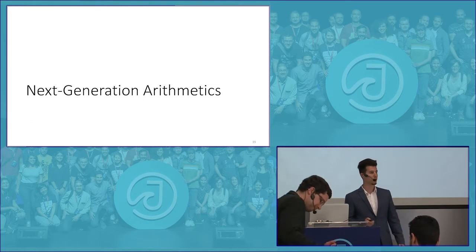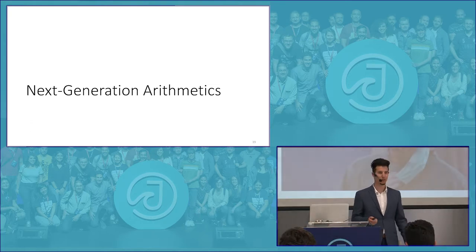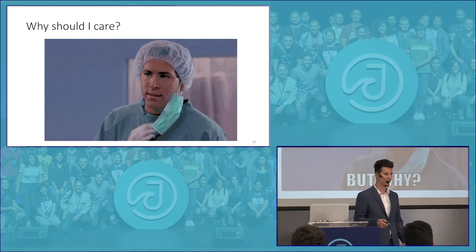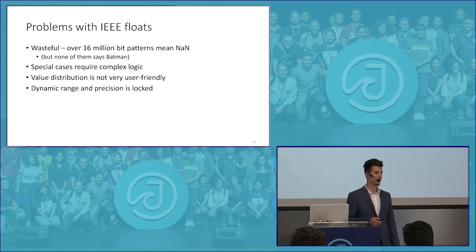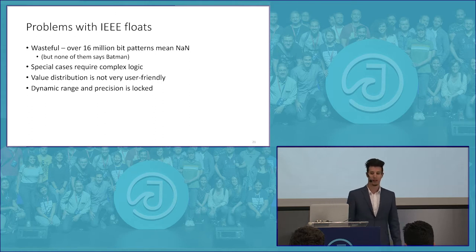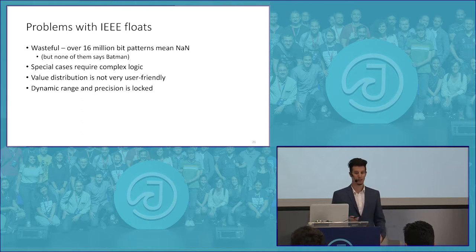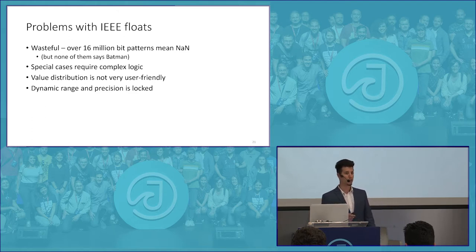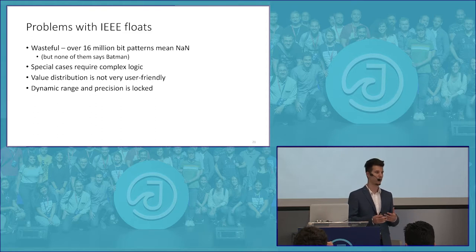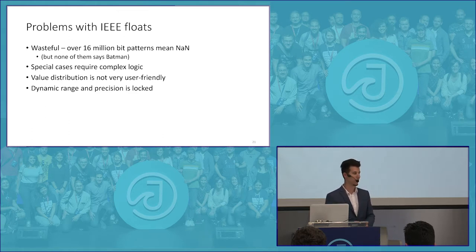In the second part of this presentation, I'm going to talk about next-generation arithmetics. The question is: what's wrong with the current generation? The thing is that IEEE floats were designed decades ago, and both the hardware we use and the problems we solve are completely different today. IEEE floats are wasteful — we waste a lot of bit patterns on not-a-number values that weren't really utilized, and they were originally designed so developers could assign different meanings to them to identify problems, but in the end that wasn't used.